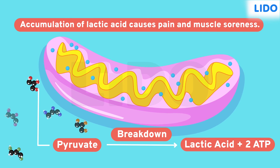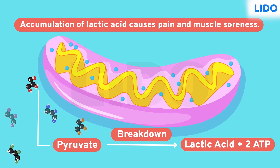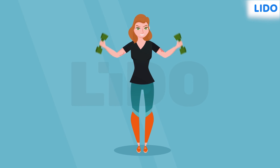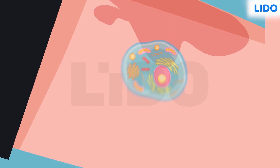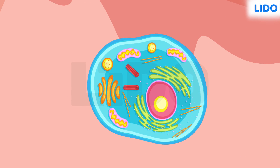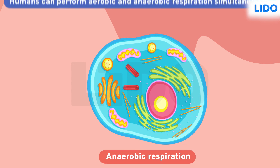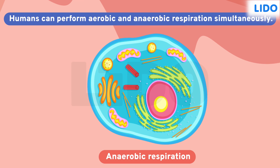Accumulation of lactic acid causes muscle pain and soreness. When we perform strenuous activities, while all the cells of the body perform aerobic respiration, only the muscle cells have the ability to switch to anaerobic respiration and produce energy. Thus, humans can perform both aerobic and anaerobic respiration simultaneously.